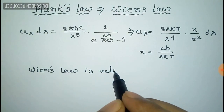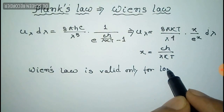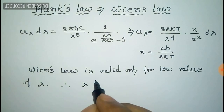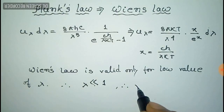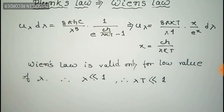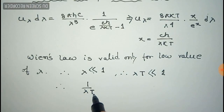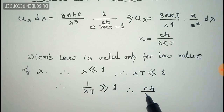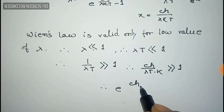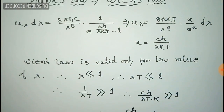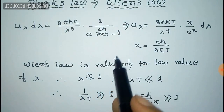Now, Wien's law is only valid for low values of wavelength λ. When λ is very small, λT is also very much less than 1. Then 1/λT is very much greater than 1, and therefore hc/λkT is very much greater than 1. So obviously the exponential e to the power hc/λkT is very very much greater than 1.